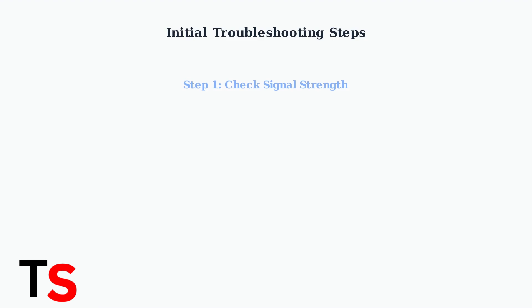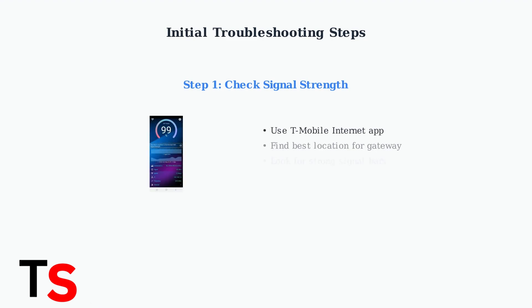First, check your signal strength using the T-Mobile internet app. The app will help you find the optimal location for your gateway by showing signal quality in different areas of your home.